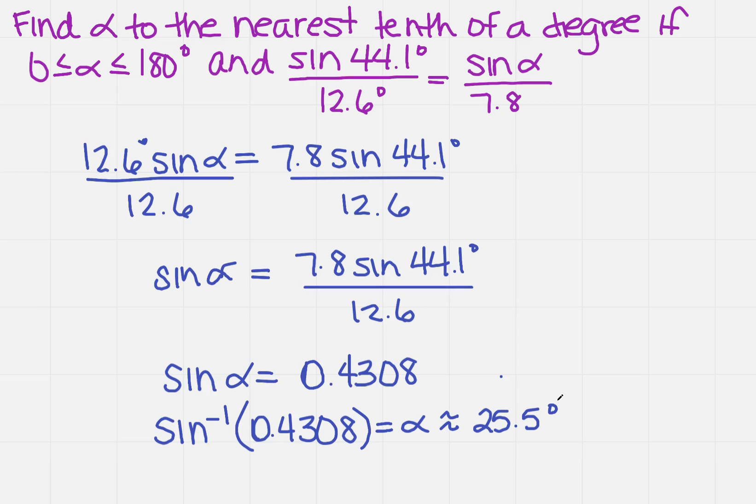Okay, that's great, but I know that this interval is between 0 and 180. So I need to make sure that there's not another solution. Remember, you want to find that something's got the same terminal side. And when I do that, I'm going to get 154.5 degrees. So how did I do that? I took 180, and I subtracted 25.5 in order to get the second solution.